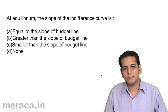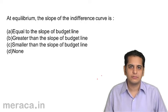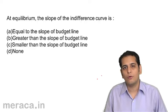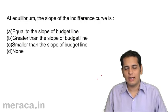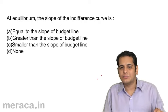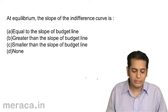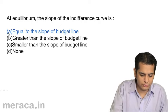Equilibrium is the point where the budget line and IC meet. At that point, the slope of both the indifference curve and the budget line is equal because they are both tangent to each other at that point, so the slope becomes equal. That's the answer.